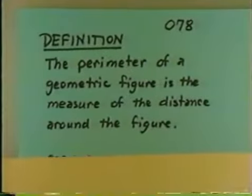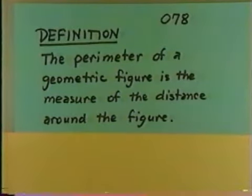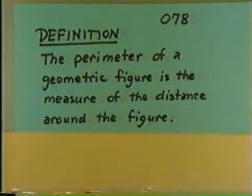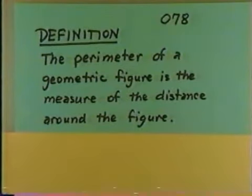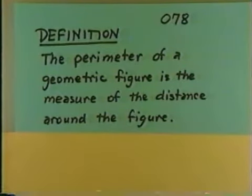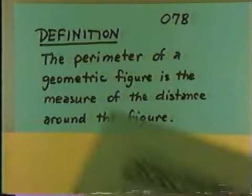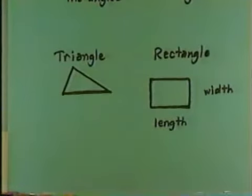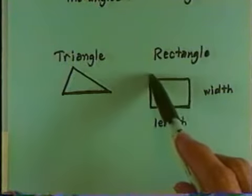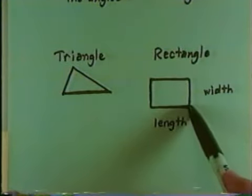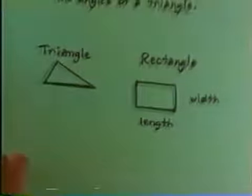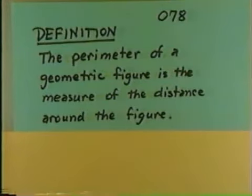Let's take a look at a definition. The perimeter of a geometric figure is the measure of the distance around the figure. If we look at a triangle, the perimeter would be the measure of that distance around the triangle — all three sides. The perimeter of a rectangle would be the measure of the distance around the rectangle, all the way around through all four sides. The perimeter is the measure of the distance around the figure, all the way around.